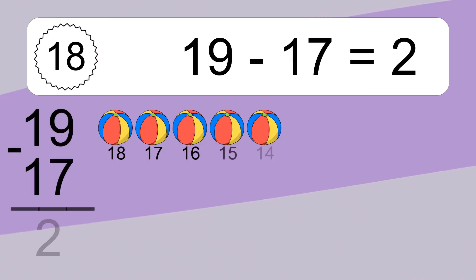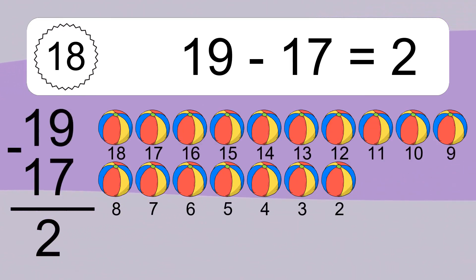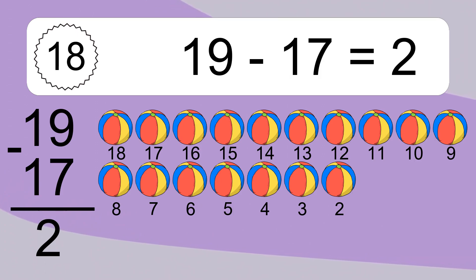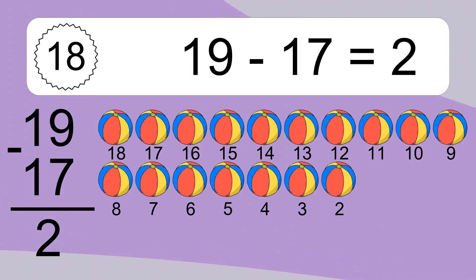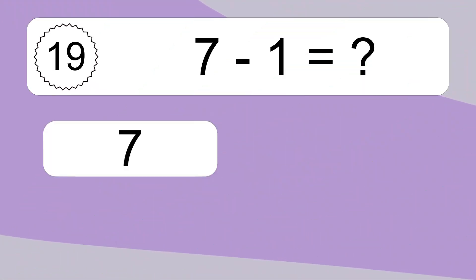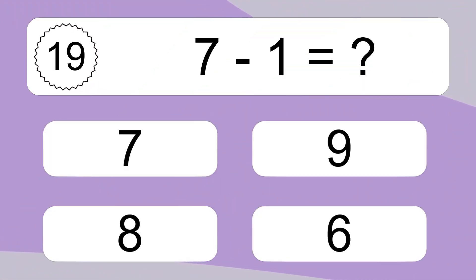19 minus 17 equals 2. Let's count it! 18, 17, 16, 15, 14, 13, 12, 11, 10, 9, 8, 7, 6, 5, 4, 3, 2. 7 minus 1 equals what?